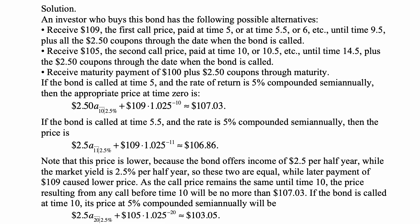Note that this price is lower because the bond offers income of $2.50 per half year, while the market yield is 2.5% per half year, so these two are equal. However, the later payment of 109 causes a lower price because it's discounted over a longer period of time. As the call price remains the same until time 10, the price resulting from any call before time 10 will be no more than $107.03.